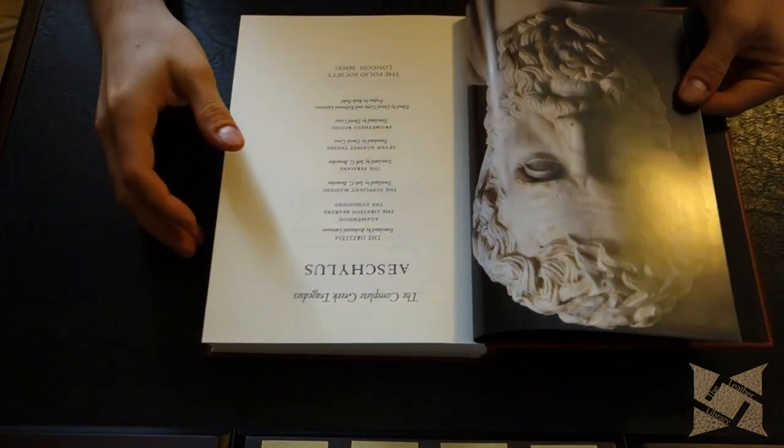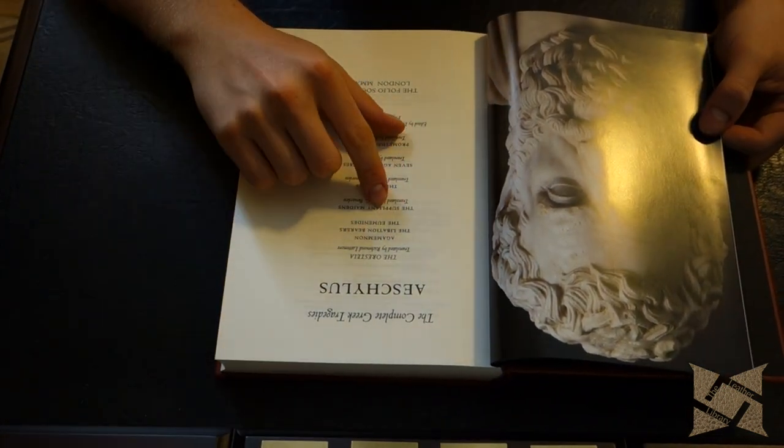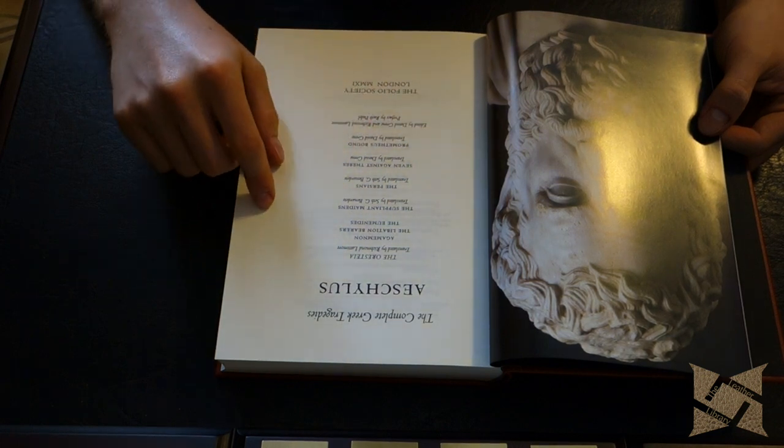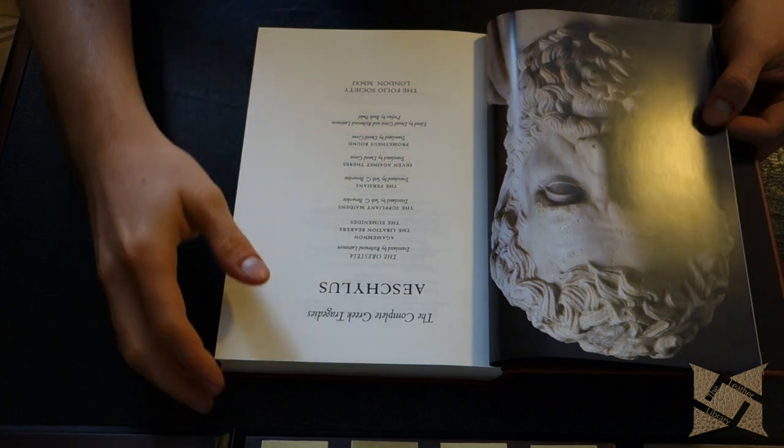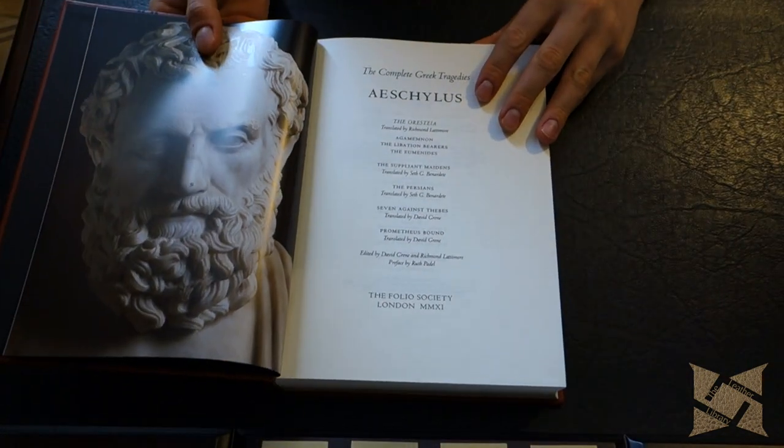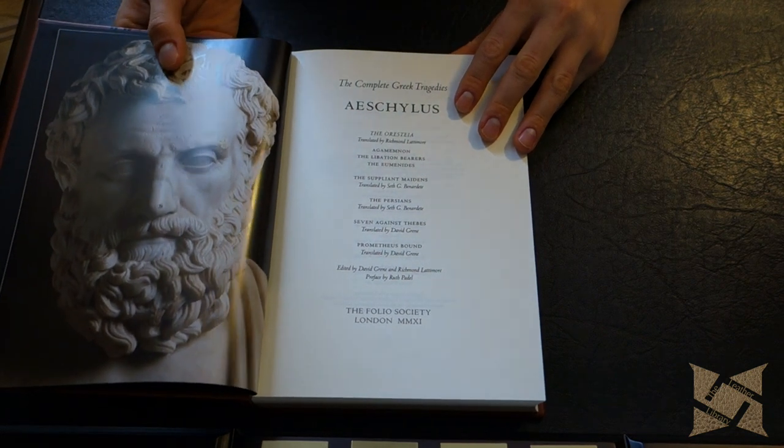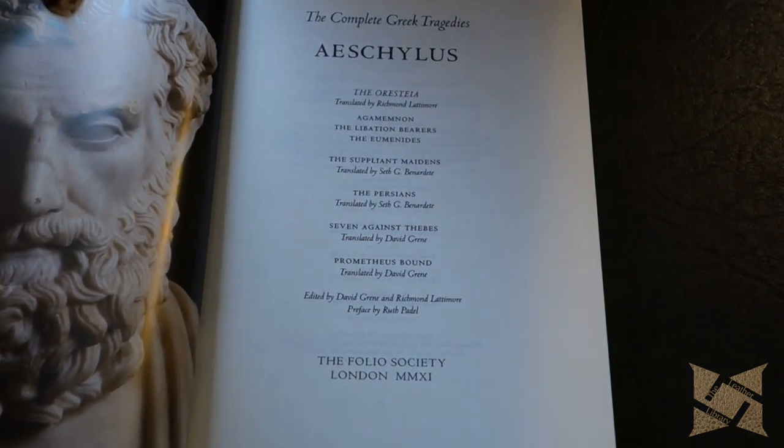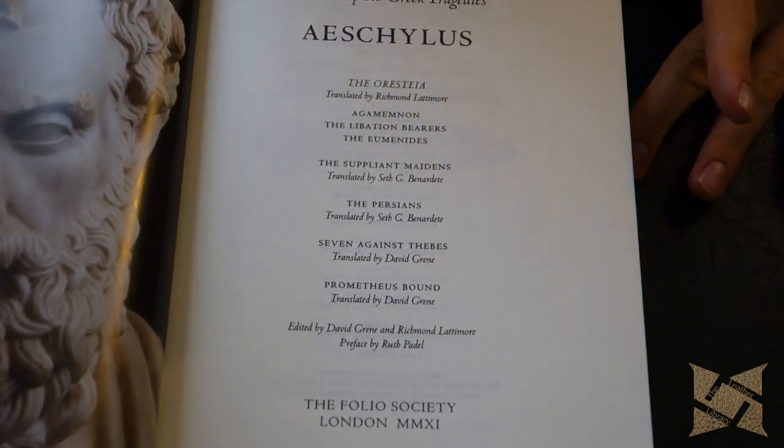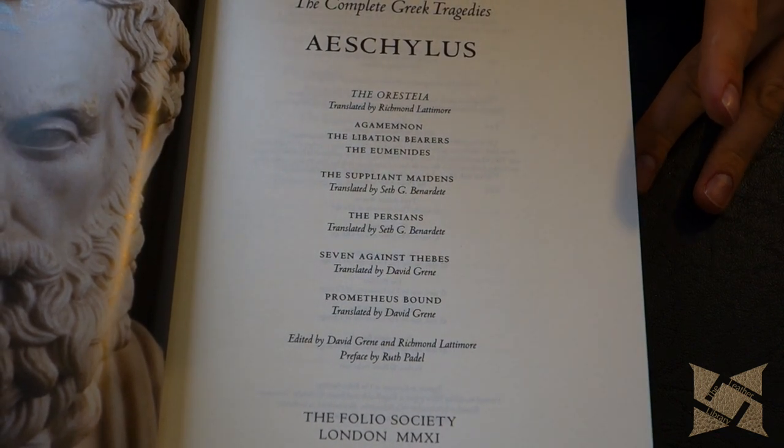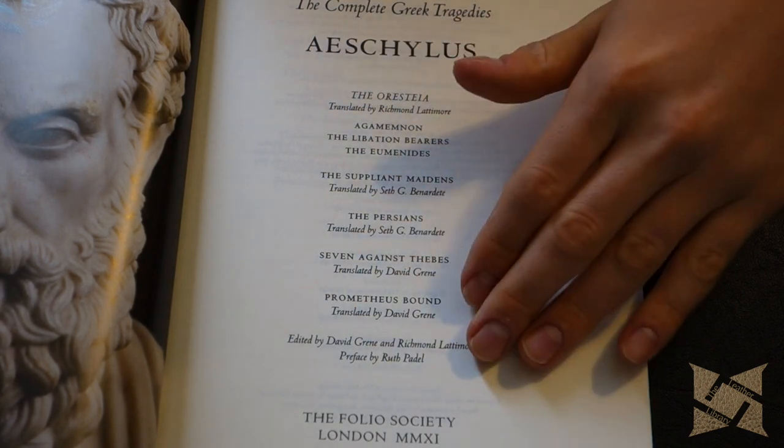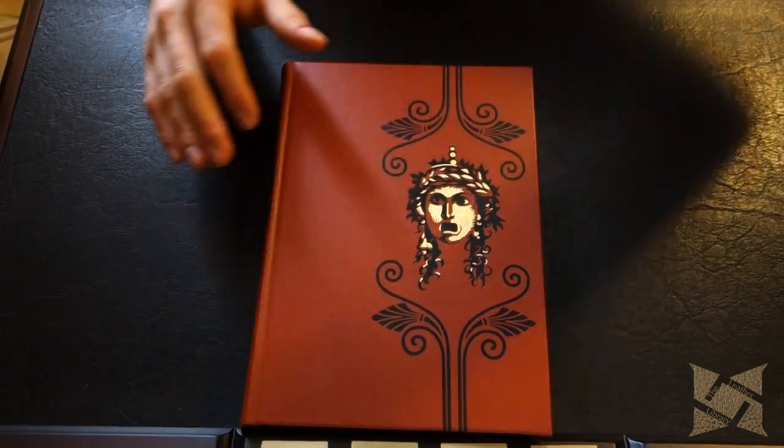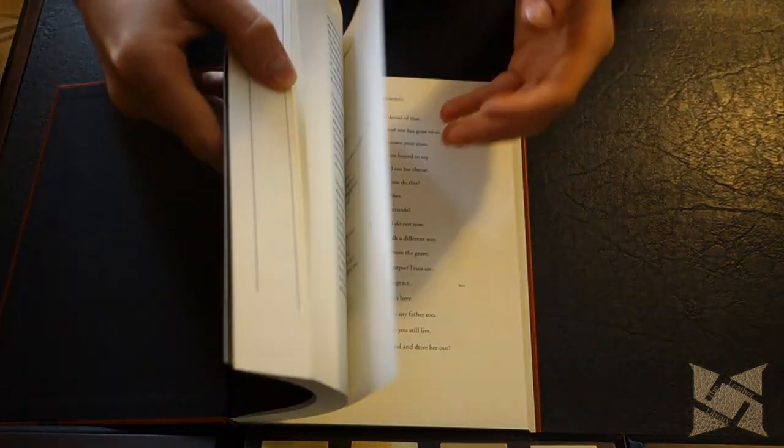You'll see all the different plays here, translated by different authors. Volume one includes the Oresteia, Agamemnon, the Suppliant Maidens, the Persians, Seven Against Thebes, and Prometheus Bound. You can look online or zoom in here to see who the translators are. Hopefully the camera can pick up clearly enough who the translators of the individual plays are.